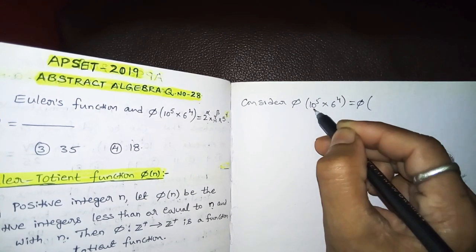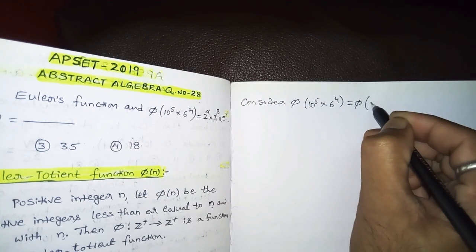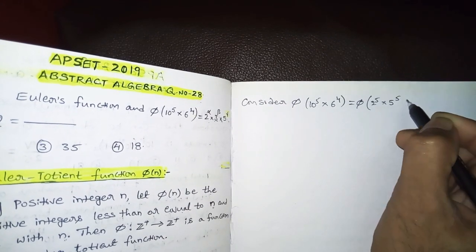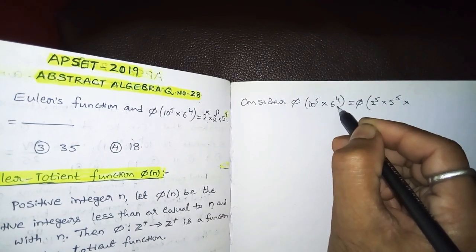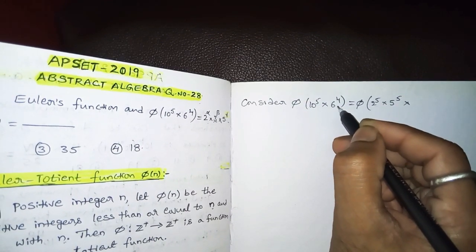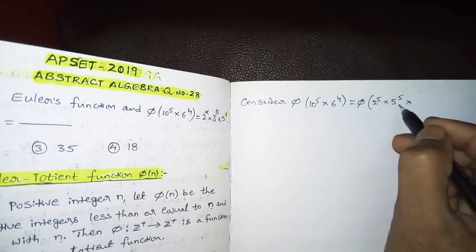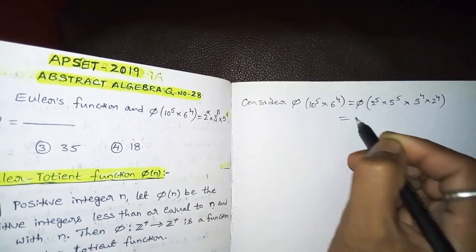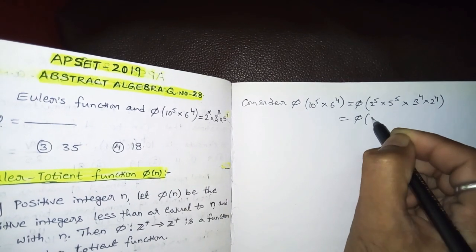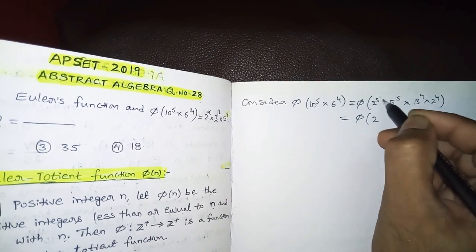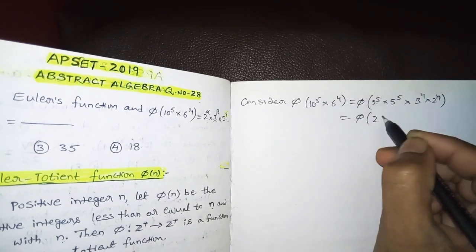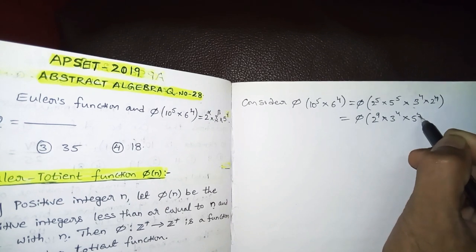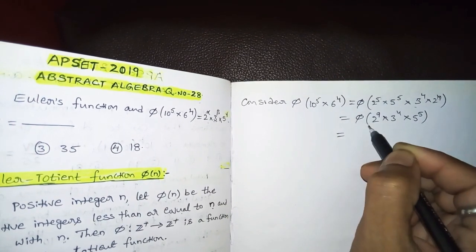We can write 10 = 2 × 5, so 10^5 = 2^5 × 5^5. And 6 = 2 × 3, so 6^4 = 2^4 × 3^4. Therefore 10^5 × 6^4 = 2^5 × 5^5 × 2^4 × 3^4 = 2^9 × 3^4 × 5^5.